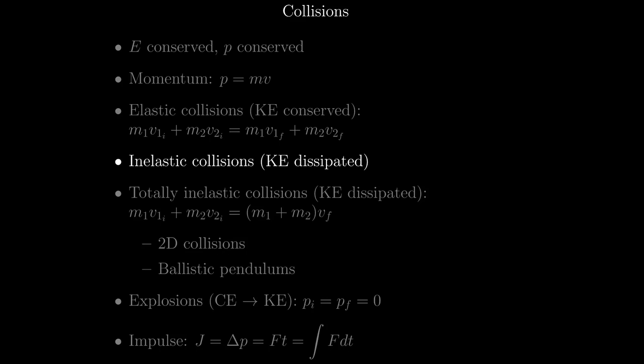In inelastic collisions, objects stick together for a little before separating, so some kinetic energy is dissipated — that is, lost to other forms of energy, like heat. Most real-life collisions are inelastic. In totally inelastic collisions, also known as perfectly or completely inelastic collisions, objects stick together entirely, essentially becoming one object. As a result, kinetic energy is dissipated. This is the type of inelastic collision that will appear on the AP exam.